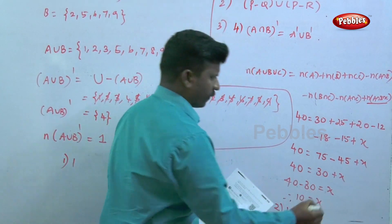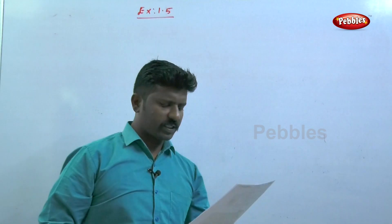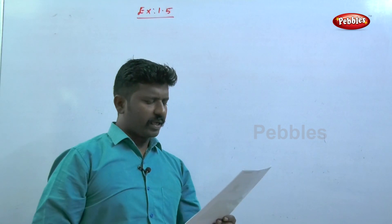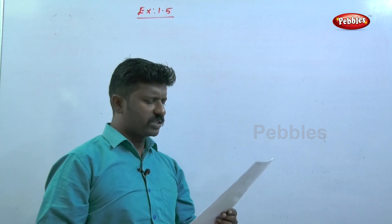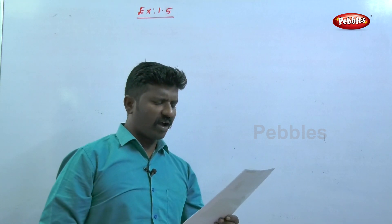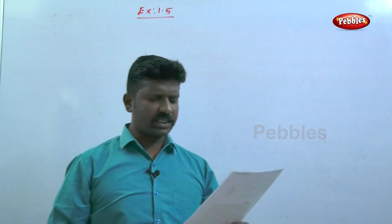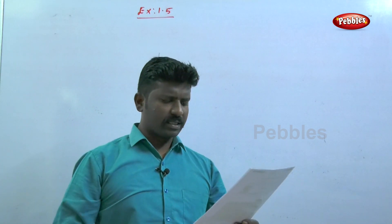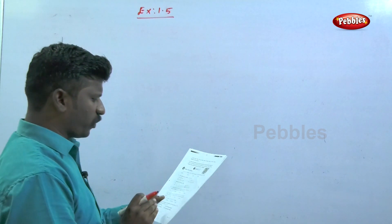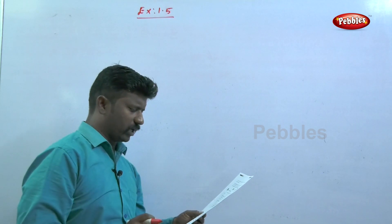The fifth question uses the same procedure. Given n(A∪B∪C) = 100, n(A) = 4x, n(B) = 6x, n(C) = 5x, n(A∩B) = 20, n(B∩C) = 15, n(A∩C) = 25, n(A∩B∩C) = 10. Use the same formula to find the value of X.